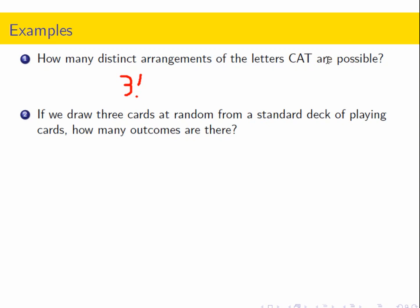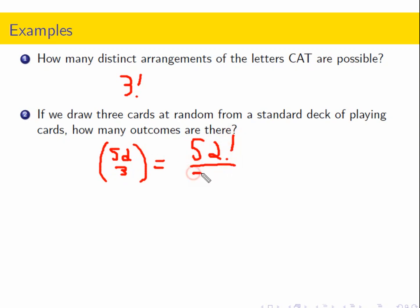If we draw three cards at random from a standard deck of playing cards, how many outcomes are there? We have 52 things to choose from and three to be chosen, so we use the binomial coefficient 52 choose 3, which equals 52 factorial divided by 3 factorial times 49 factorial. By the way, 52 choose 3 equals 22,100 if you evaluate that on a calculator.